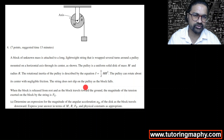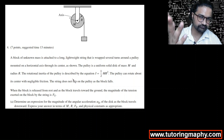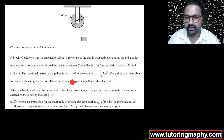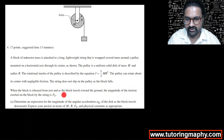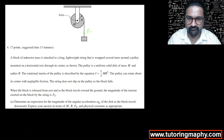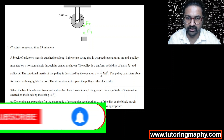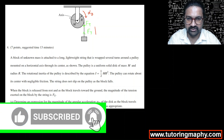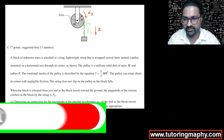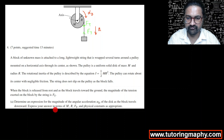The string does not slip — string does not slip means that there is considerable friction which prevents it from slipping on the pulley as the block falls. When the block is released from rest and travels toward the ground, the magnitude of the tension exerted on the block by the string is F_T. We have to determine an expression for the magnitude of the angular acceleration α_d of the pulley as the block travels downward.